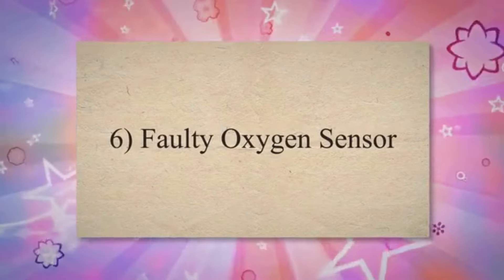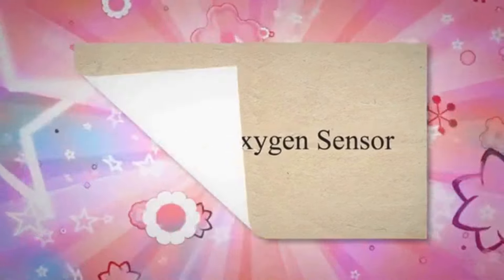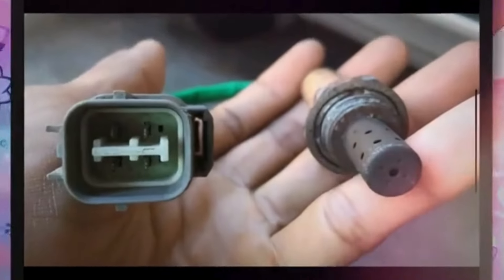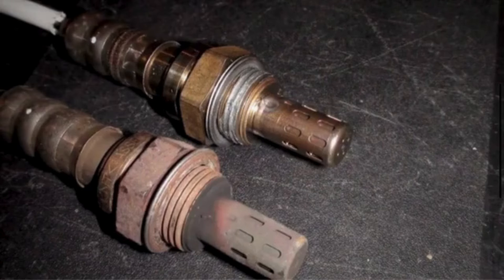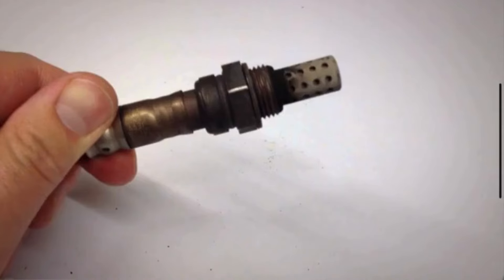6. Faulty oxygen sensor. The oxygen sensor measures the amount of oxygen in the exhaust gases and helps the engine control module adjust the air-fuel mixture. A malfunctioning oxygen sensor can lead to improper fuel delivery and misfires.